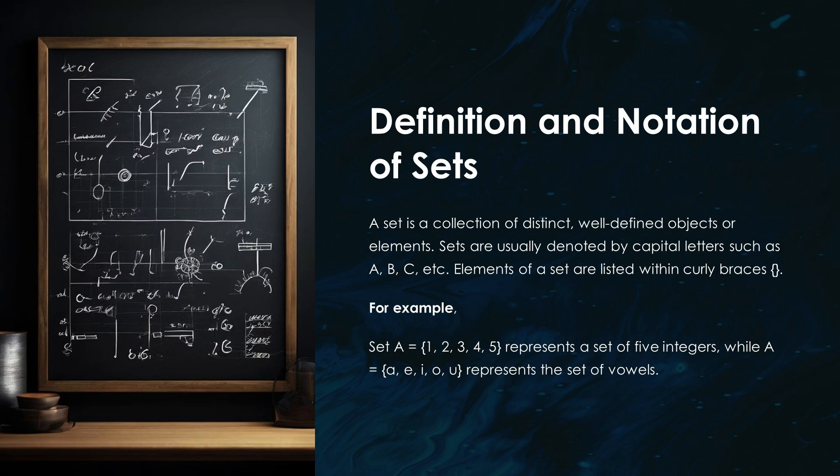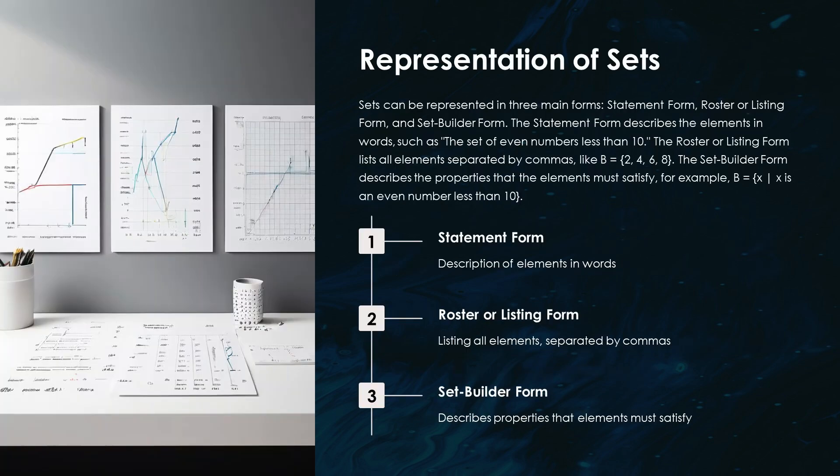Now let's talk about how we can represent sets. There are three main ways: (1) Statement form — you describe the elements in words, for example, 'the set of even numbers less than 10.' (2) Roster or listing form — you list out all the elements, like set B = {2, 4, 6, 8}. (3) Set-builder form — a bit more technical; you describe the properties the elements must satisfy, like set B = {x | x is an even number less than 10}.